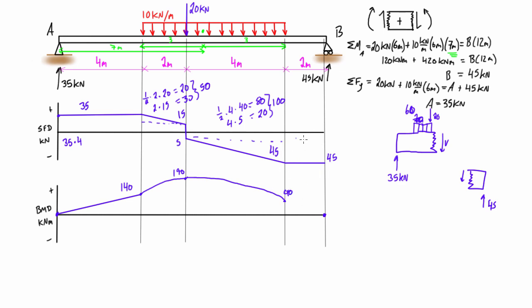The area of the final rectangle is base times height — 2 meters times 45 kN — which is 90 kNm. This is also on the negative side, so we go from 90 kNm minus 90 kNm, bringing us right down to zero with a straight linear line. That's exactly what we were looking for — the bending moment ends at zero, confirming we've done this correctly.